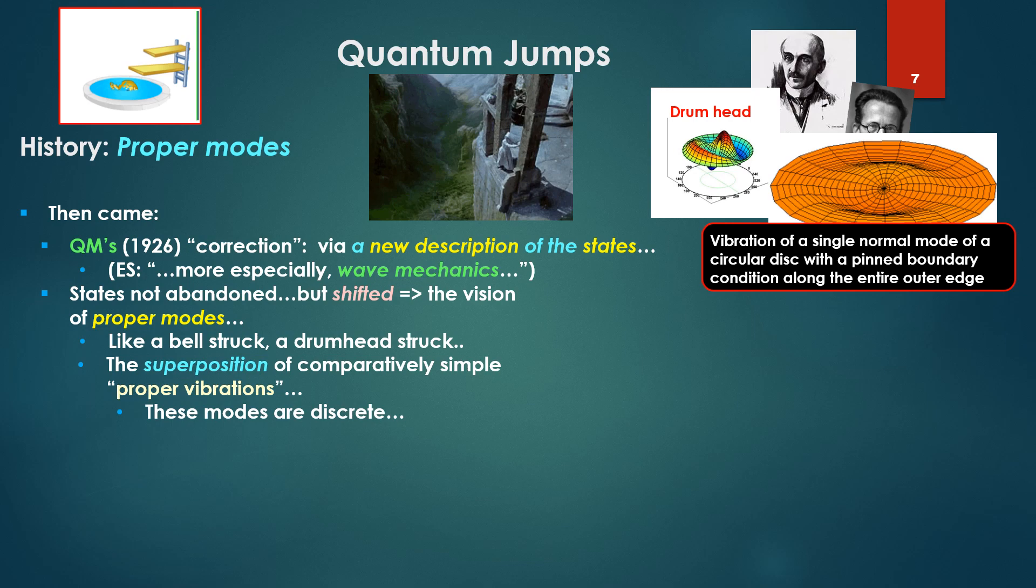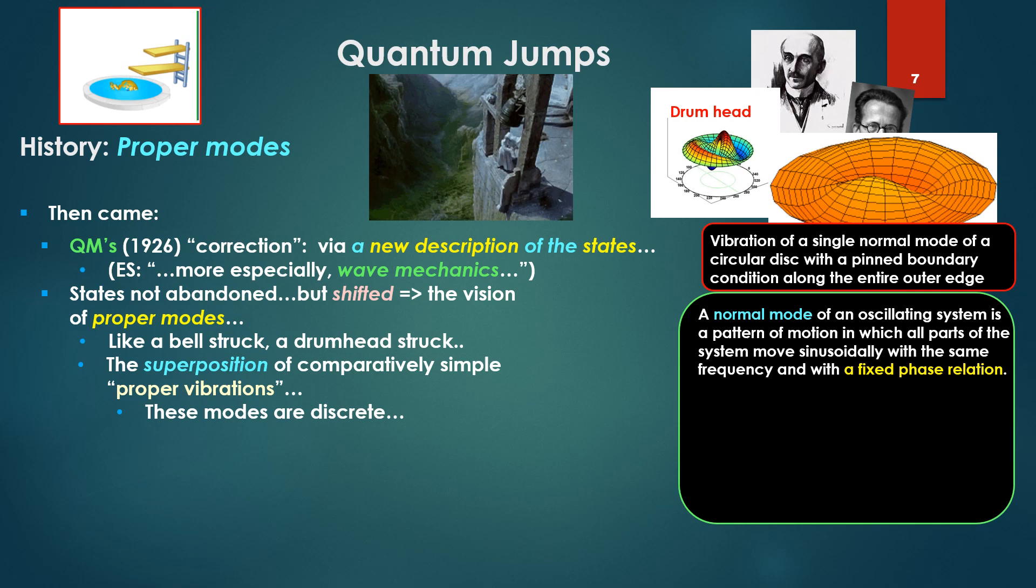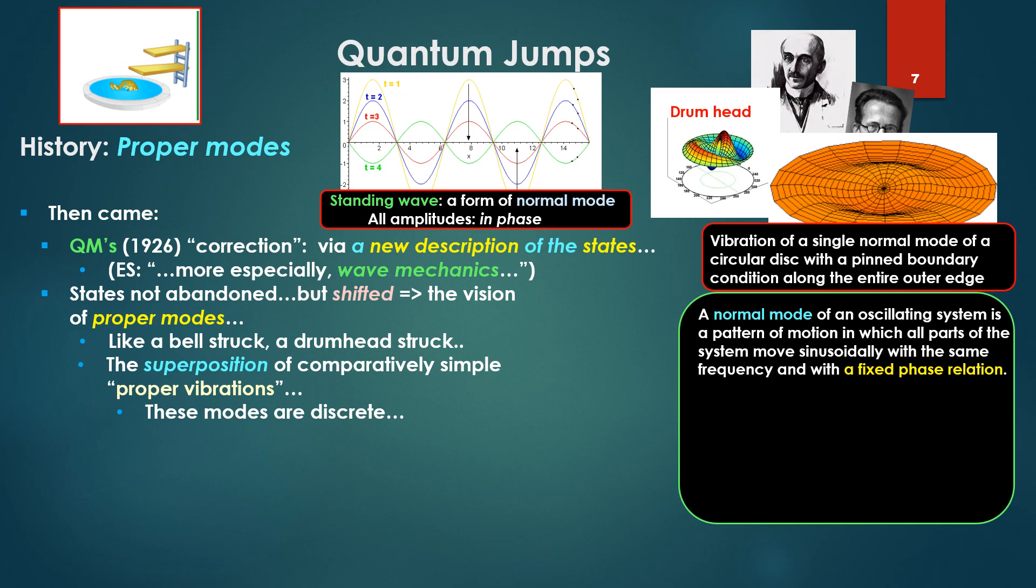We have a vibration of a single normal mode of a circular disk, with a pinned boundary, that we have a boundary set, boundary condition along the entire outer edge, sort of like a drumhead or a bell. A normal mode of an oscillating system is a pattern of motion in which all parts of the system move sinusoidally with the same frequency and with a fixed phase relation.